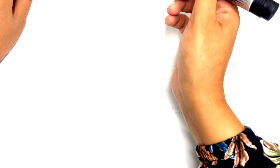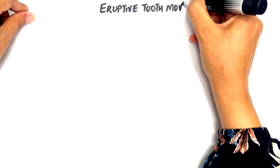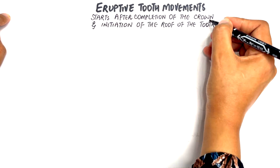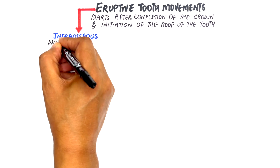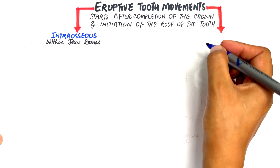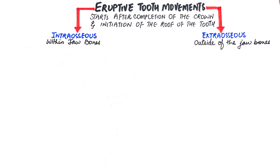In this video we will look at the eruptive and post-eruptive movements of the teeth. The eruptive phase starts with the completion of the crown and the initiation of root of the tooth. This phase has an intraosseous compartment where movement occurs within the jaw bones, and an extraosseous compartment where movement occurs outside of the bone once the tooth shows up into the oral cavity, so that teeth can reach functional occlusion.